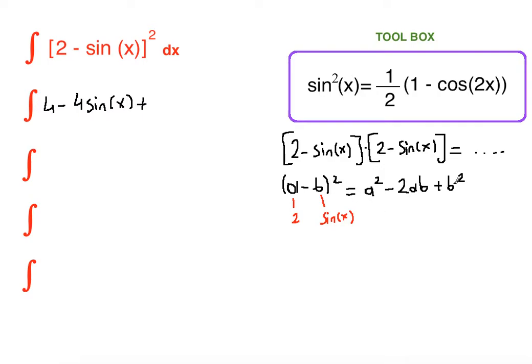Plus the b term squared which is sin²(x), dx. Here we're going to apply half-angle identity for our sin²(x). Let's substitute that: 4 - 4sin(x) plus...